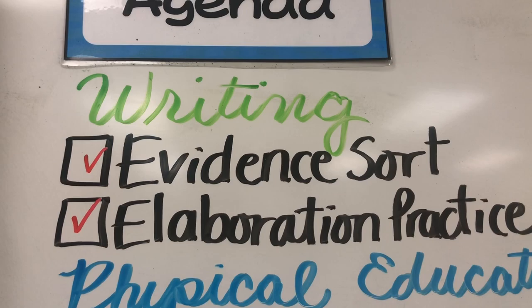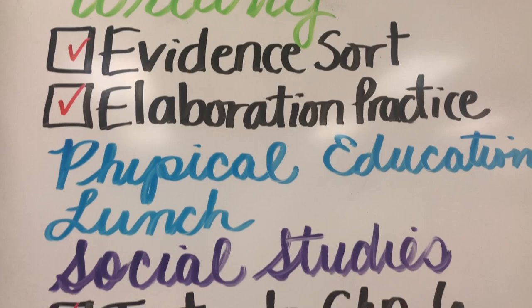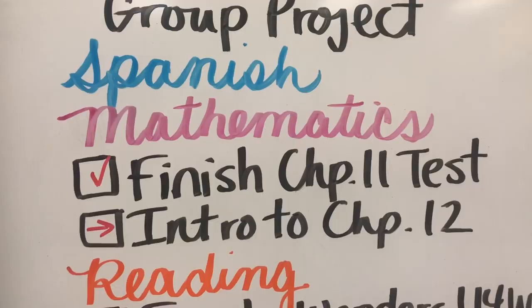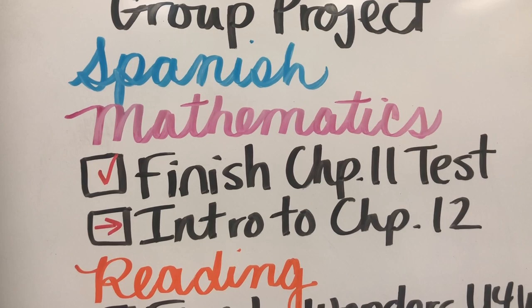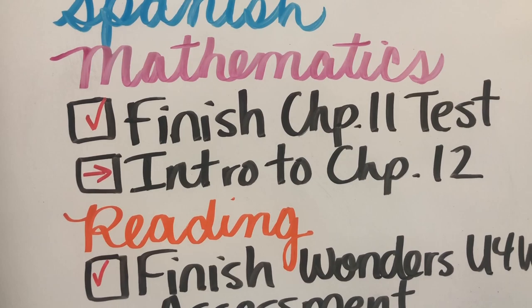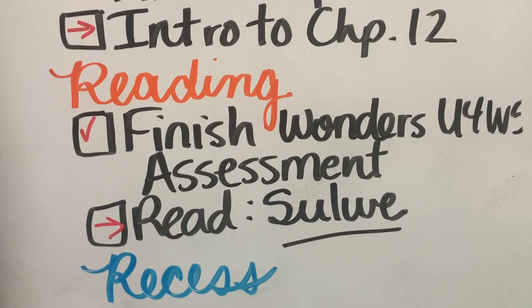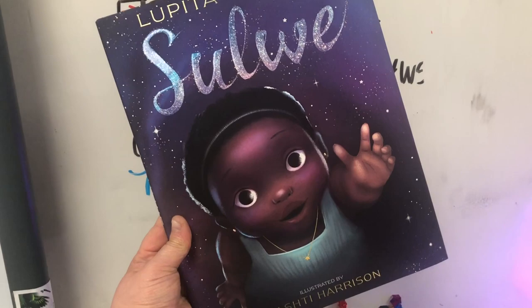Then the students started doing an elaboration practice, which I'll show you in a moment. In social studies, we introduced chapter six, but we didn't have time for a Native American project, so that got moved to next week. In math, the students were finishing their chapter 11 test and I was giving them feedback; we didn't have time to introduce chapter 12, which is fine — I'd rather start a new chapter on a new week. In reading, we were finishing our Wonders unit week five assessment, and we didn't have time to read a beautiful book by actress Lupita Nyong'o that I've been meaning to read to them — I'm definitely going to read that next week.